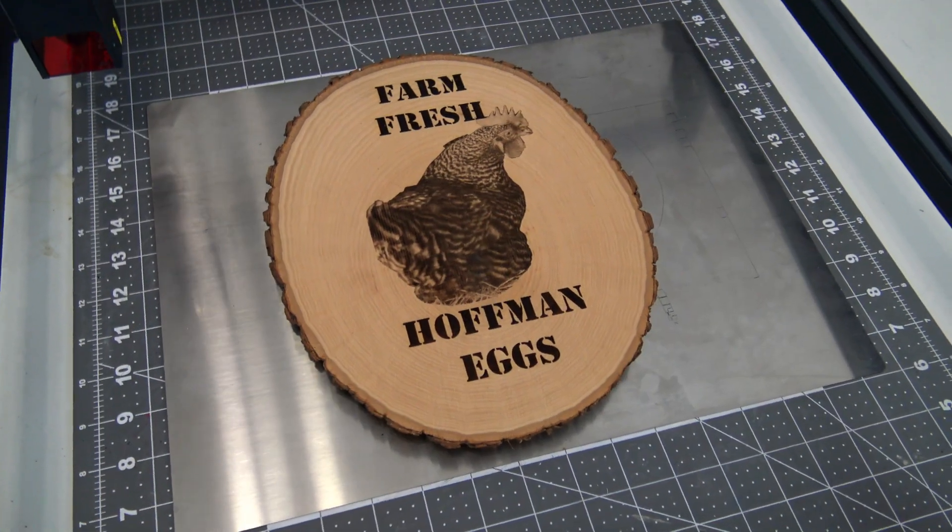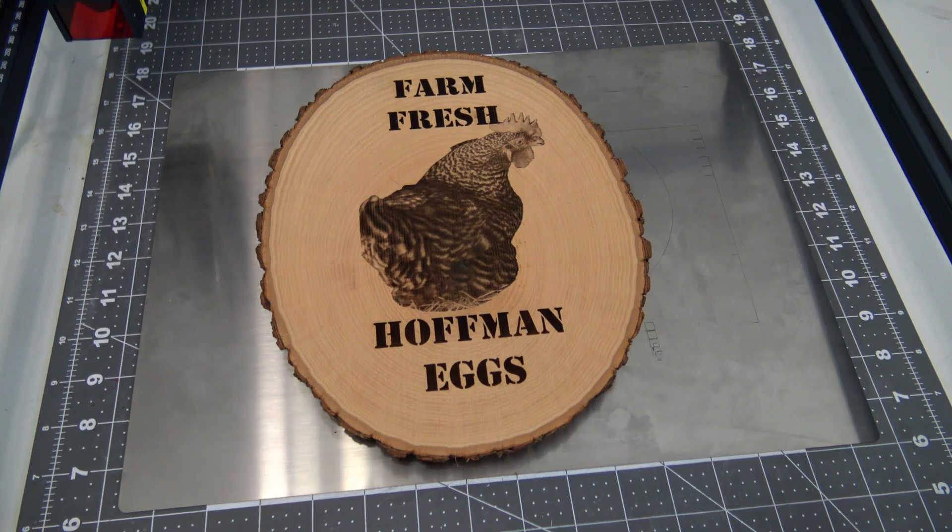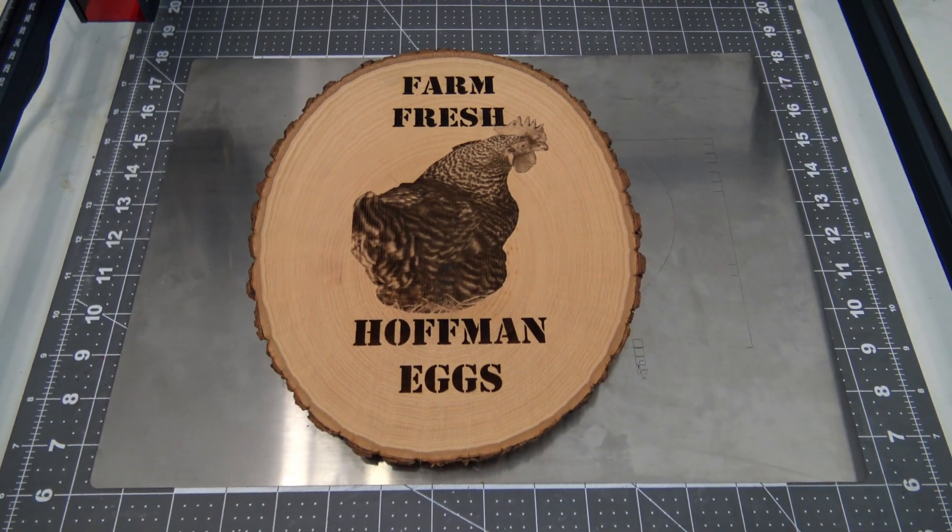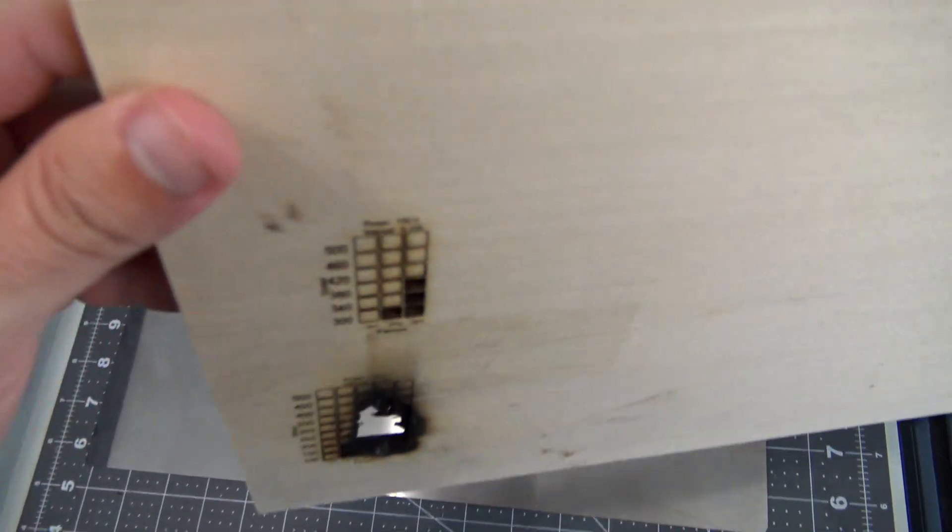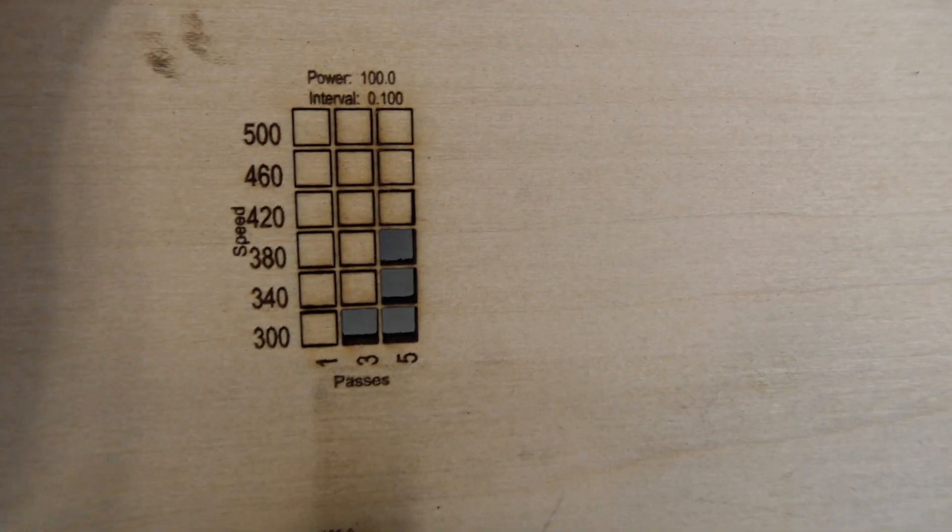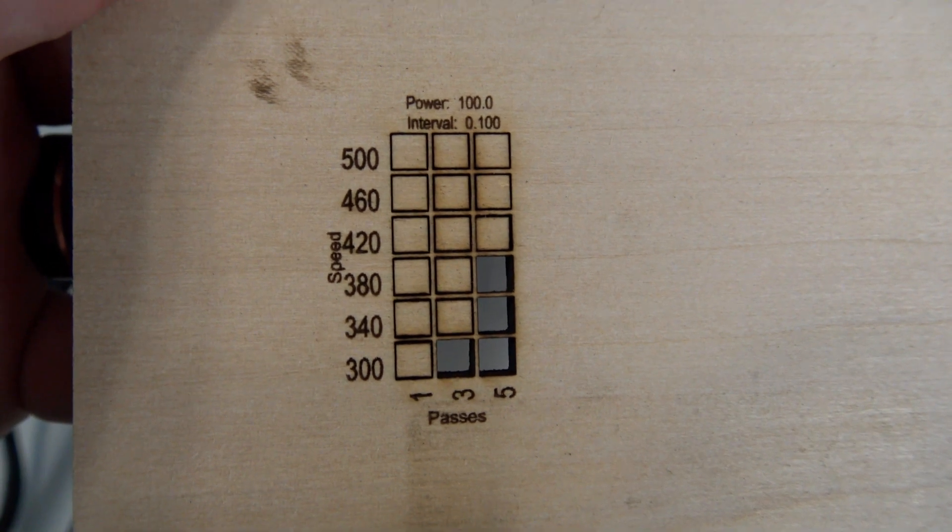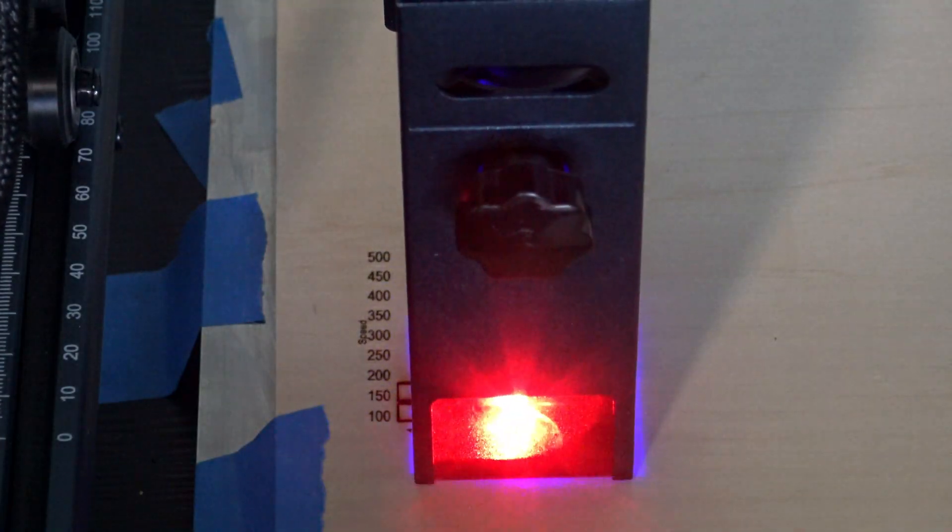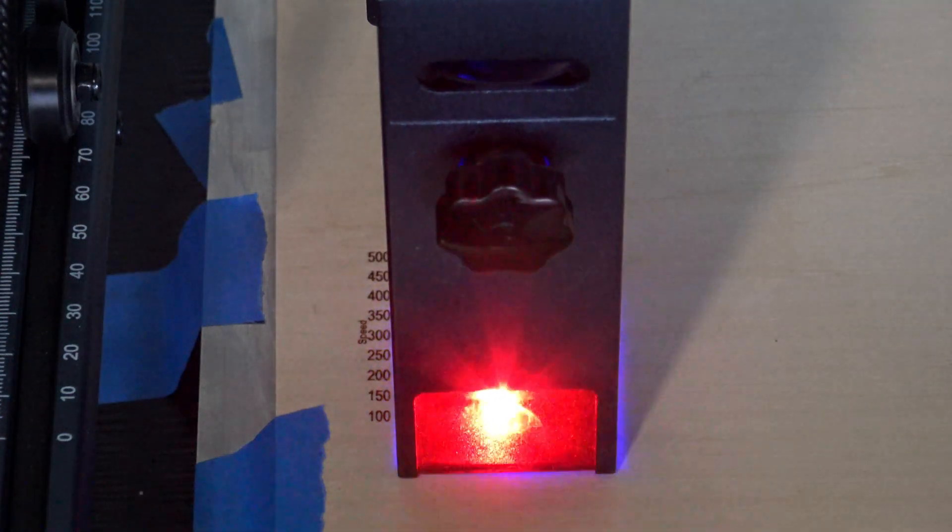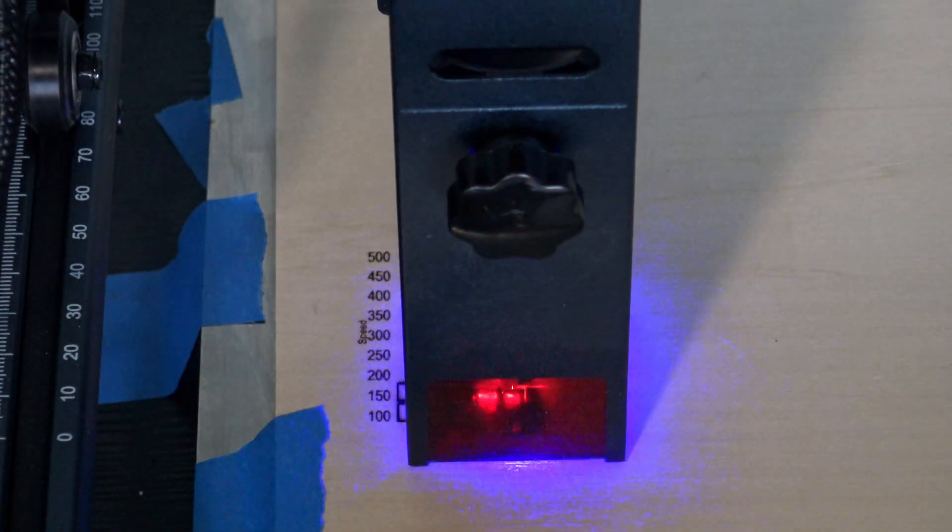First up is wood. Wood is this laser's bread and butter. Normal craftwoods like basswood and baltic birch engrave and cut beautifully. I was cutting through a quarter of an inch plywood with three passes. The fan in the laser head makes sure that there are no flames. And the only time I got flames were when I was running really slow with full power during my initial material test pattern. The accuracy of the machine is great.